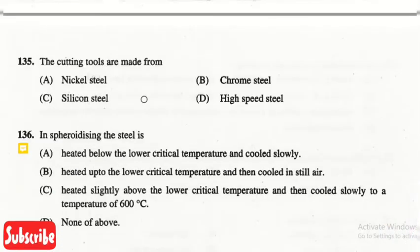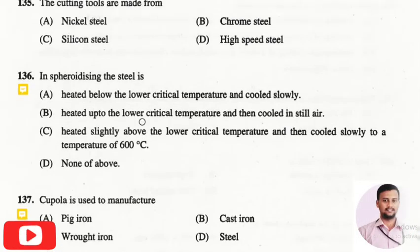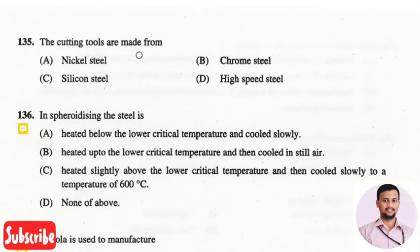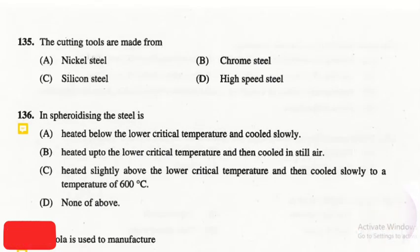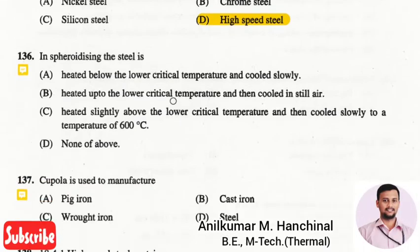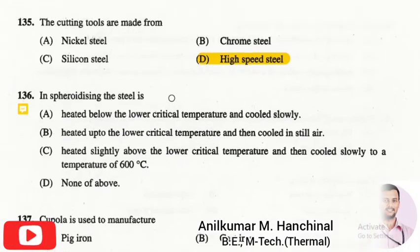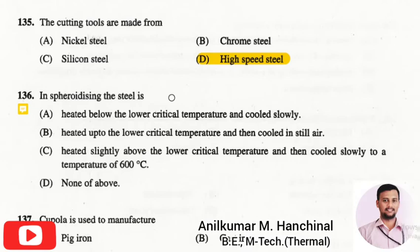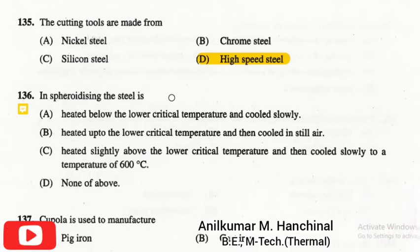The next question is: cutting tools are made from? The right answer is high speed steel. Most industrial cutting tools are made of HSS, that is high speed steel.